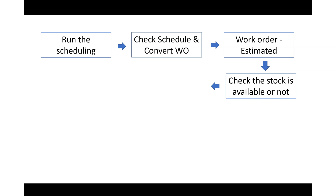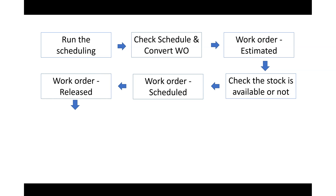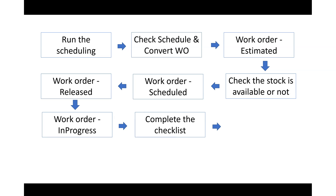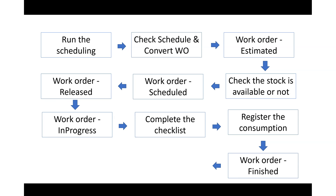If items are needed, we're going to check the stock. The work order will be scheduled and we'll release it to the floor for people to work on. Once on the floor, people will have a checklist. Based on that checklist, they'll complete their tasks and register their consumption — how many items taken, how many hours booked. Then we're going to finish the work order and end it.